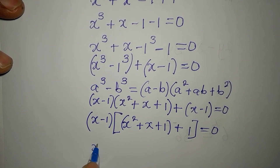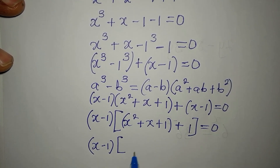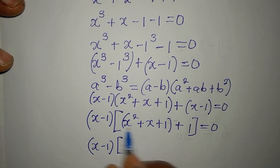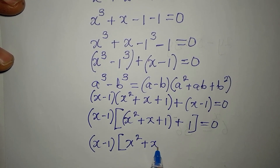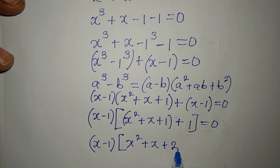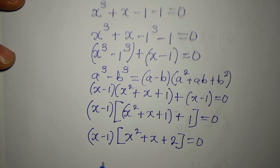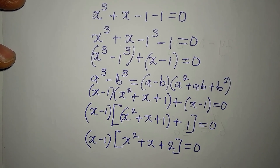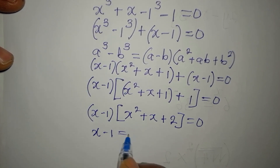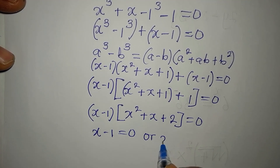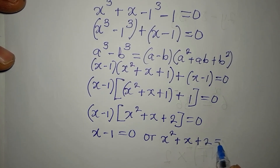So we still have x − 1 as the common factor. Adding the constants inside: x² + x + 1 + 1 = x² + x + 2. Equating to zero and expanding the product, we can now say it's either x − 1 = 0 or x² + x + 2 = 0.